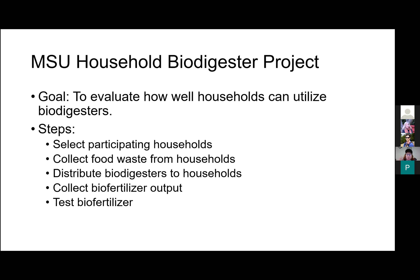The household biodigester project aims to evaluate how households can utilize biodigesters, particularly for biofertilizer production. The steps include: selecting participating households, collecting food waste, distributing biodigesters, collecting fertilizer output, and testing the biofertilizer. This fall, they completed the first two steps. This spring, they hope to begin distributing biodigesters and start collecting biofertilizer and testing it.